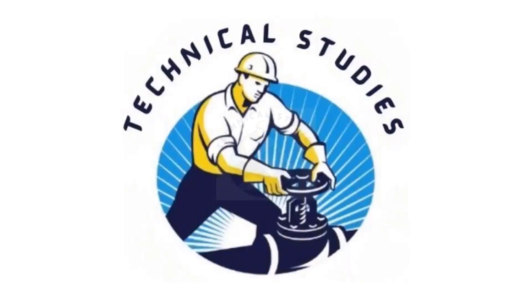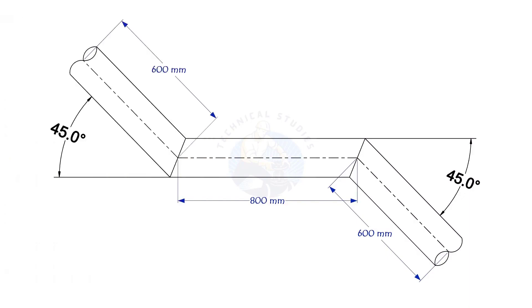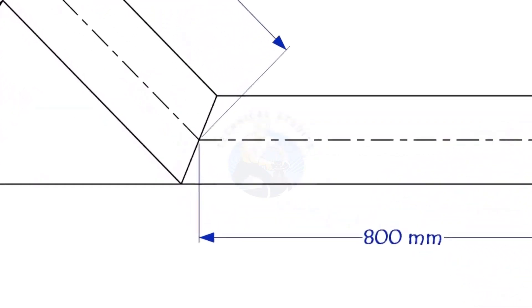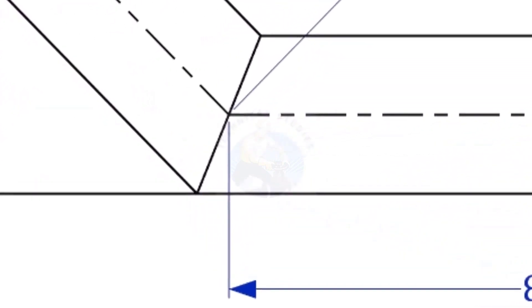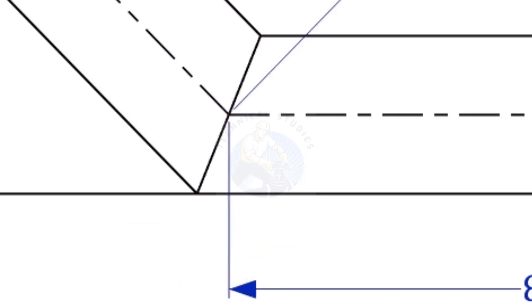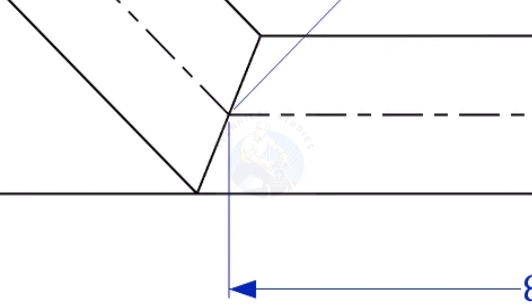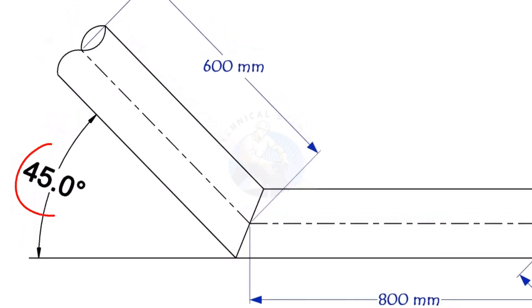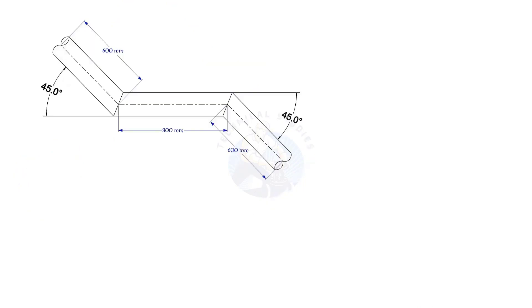Welcome to technical studies. In this video, we will learn how to mark an offset miter in any degree on a pipe. To mark a miter cut, we need to know the cutback of the miter. In this offset, the nominal diameter of the pipe is 6 inch. The angle of the miter is 45 degrees. This method is suitable for cutback of any degree.